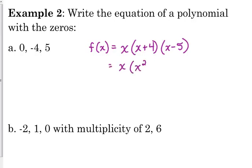And we do want to multiply this out. So x plus 4 times x minus 5 is x squared minus x minus 20. And distribute that x, so x cubed minus x squared minus 20x.